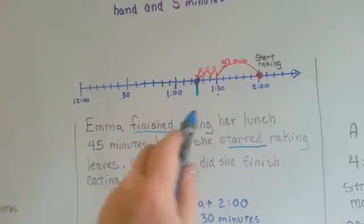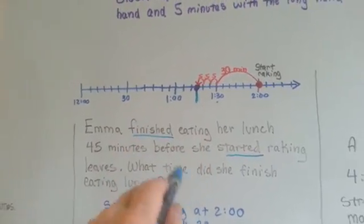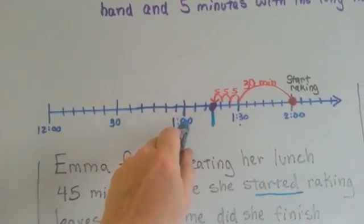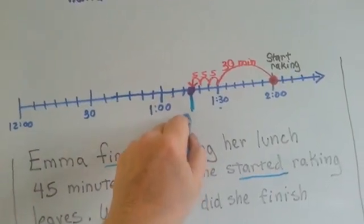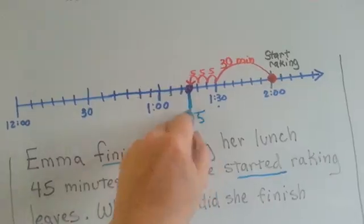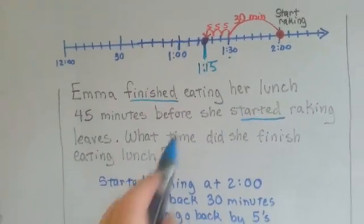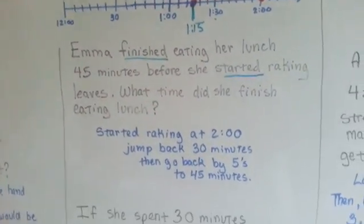It's in between 1 o'clock and 1:30, right in the middle. Well, each increment is 5 minutes, so this is 1 o'clock, 1:05, 1:10, 1:15. So we know that Emma finished eating lunch at 1:15 p.m.